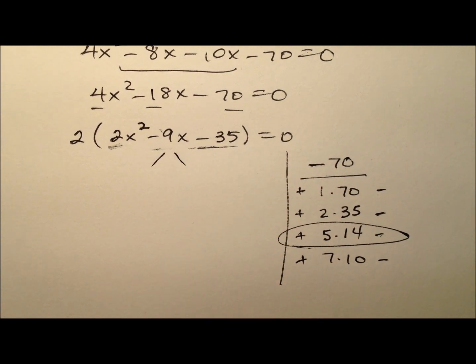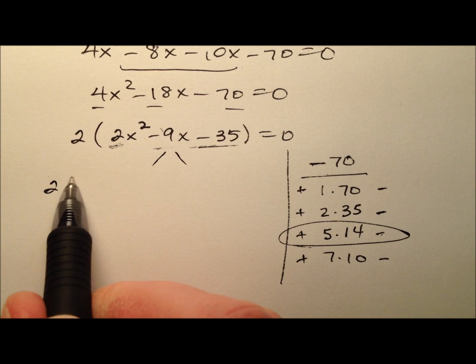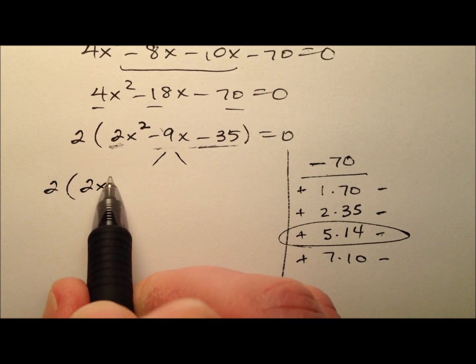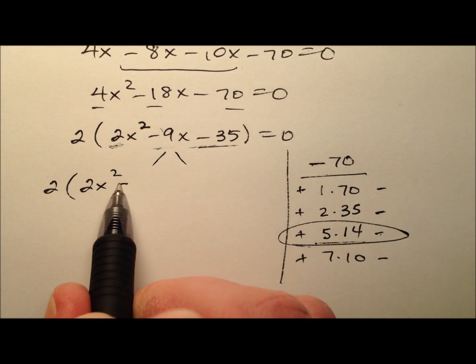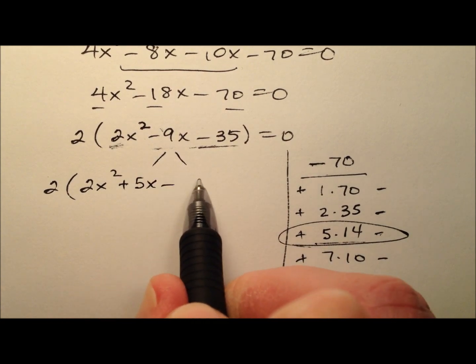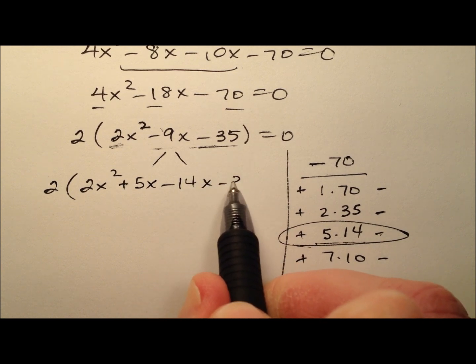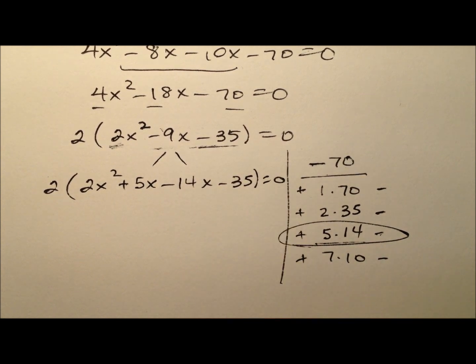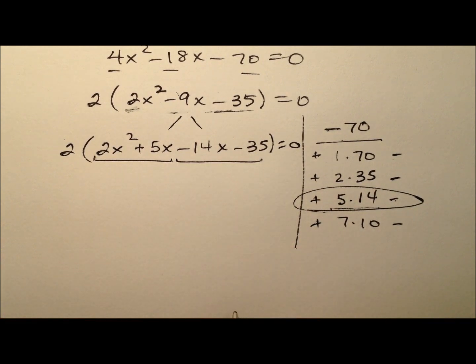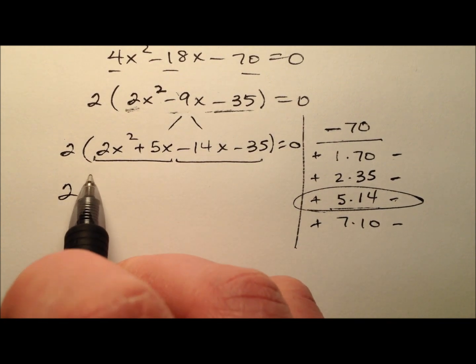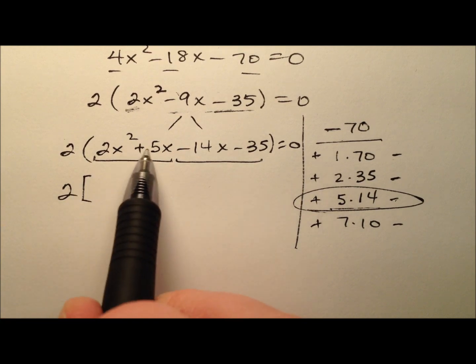So let's go ahead and rewrite that middle term. We're going to take it and break it down into two like terms that are both x's but have these coefficients. So positive 5x and negative 14x and equals 0. So at this point, we can do factor by grouping.